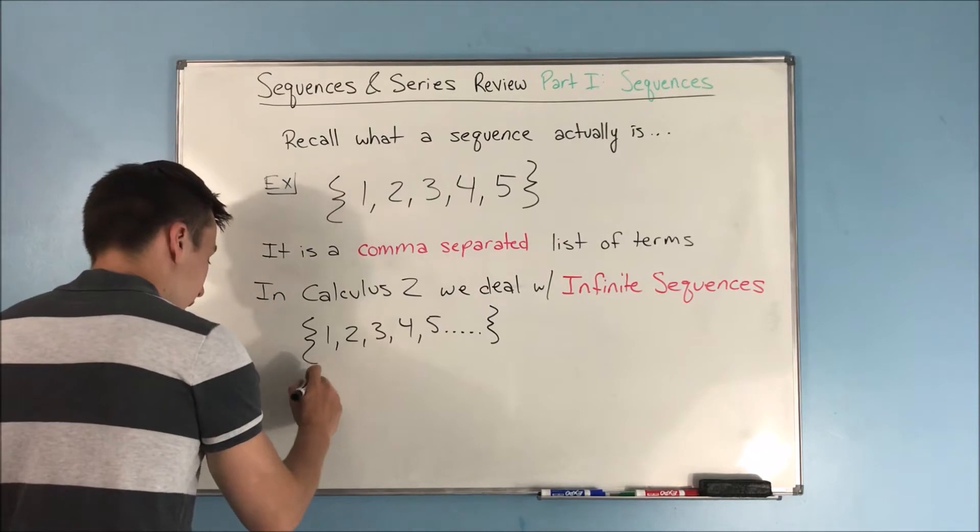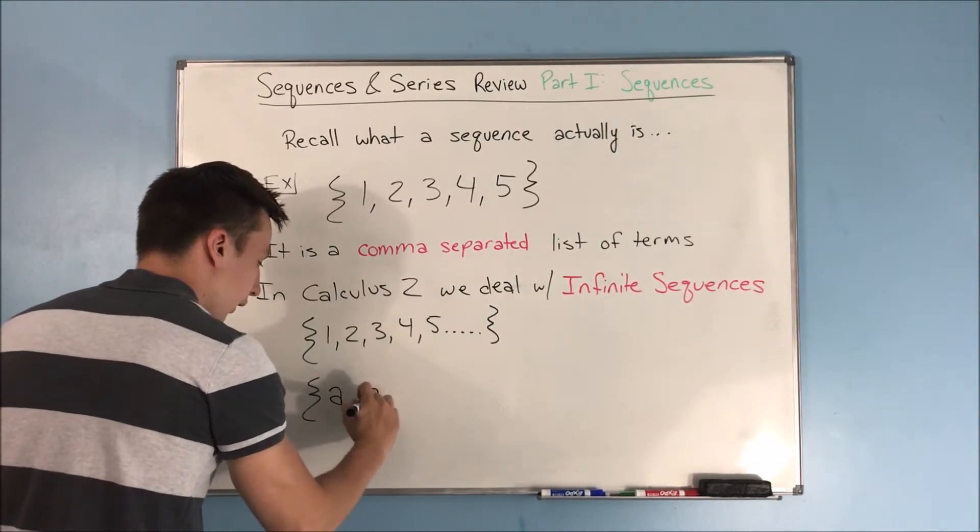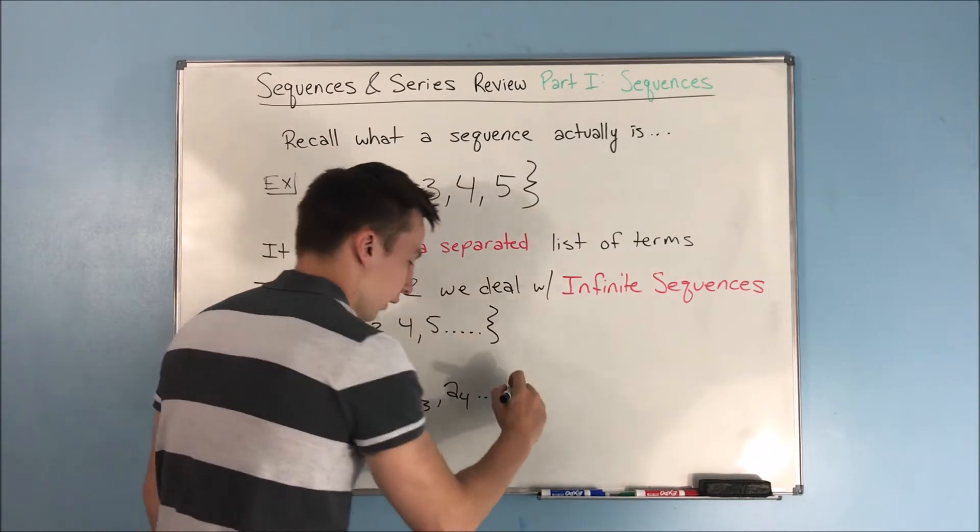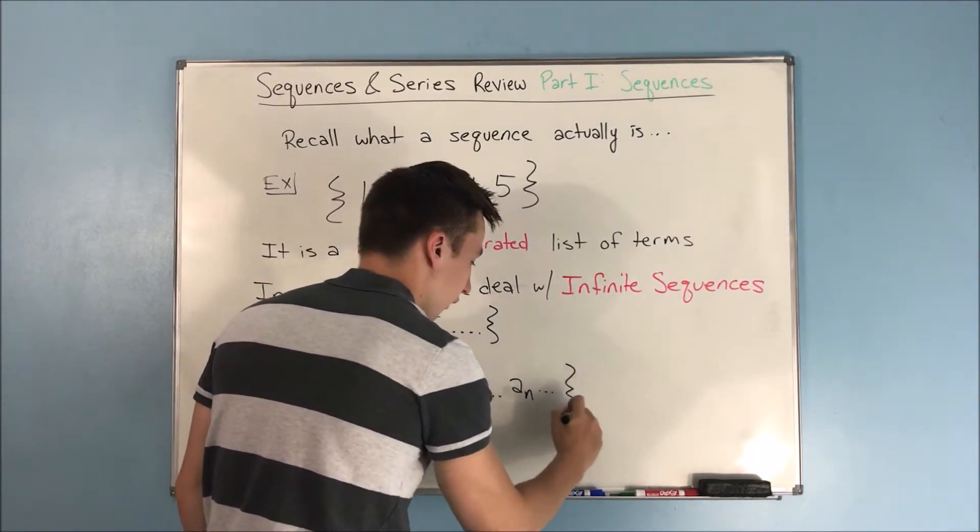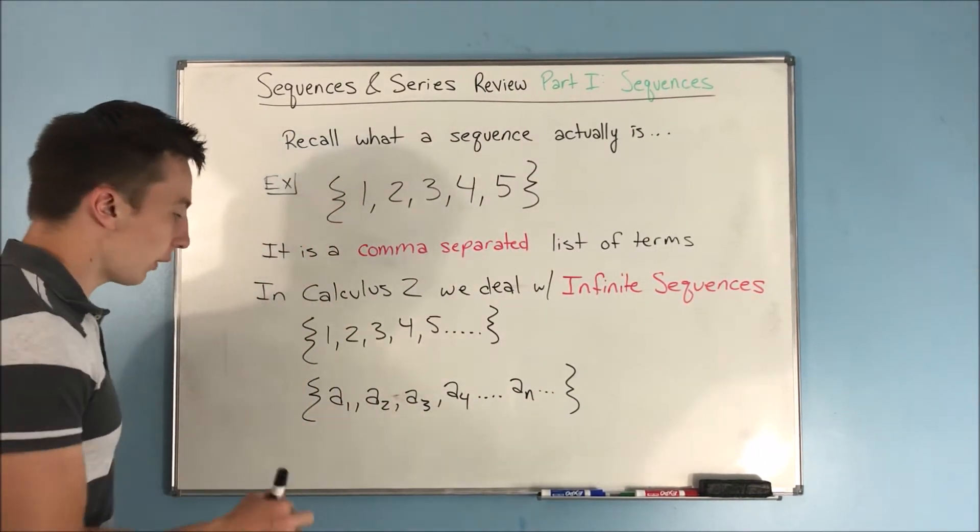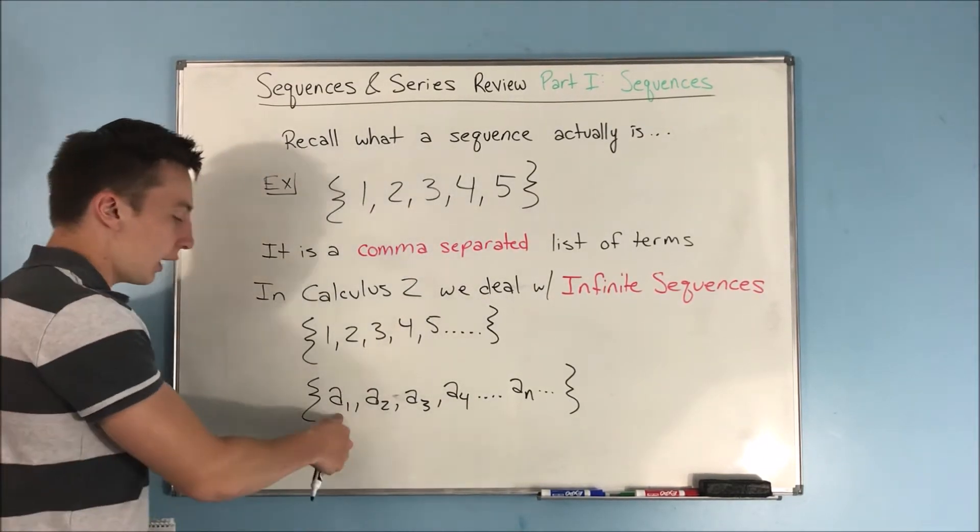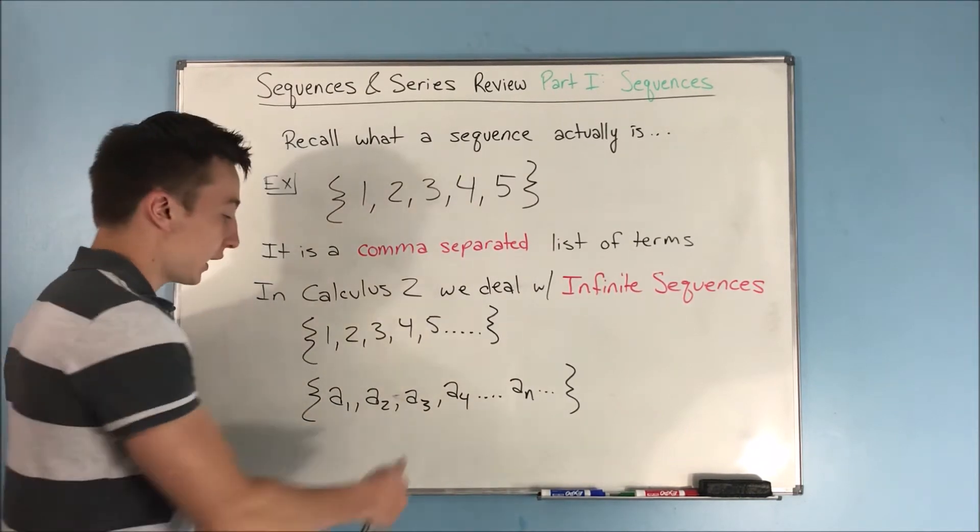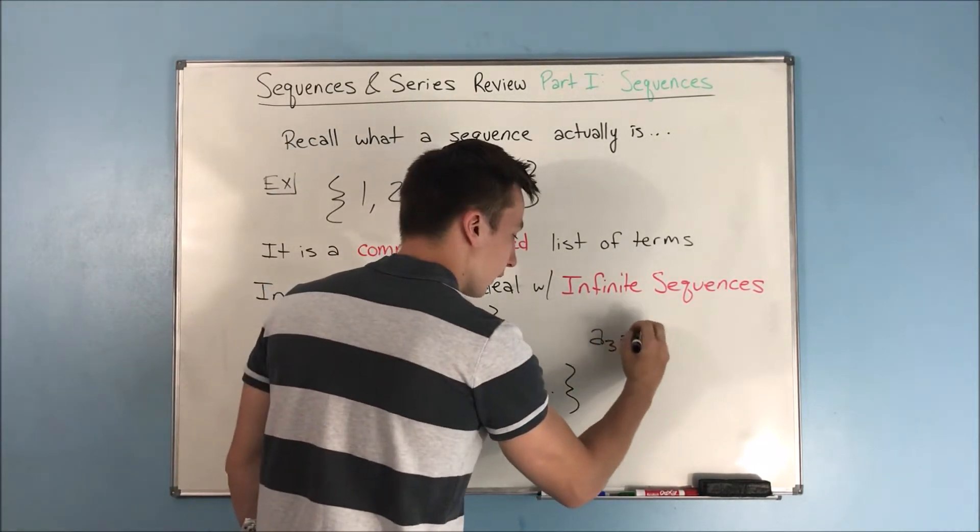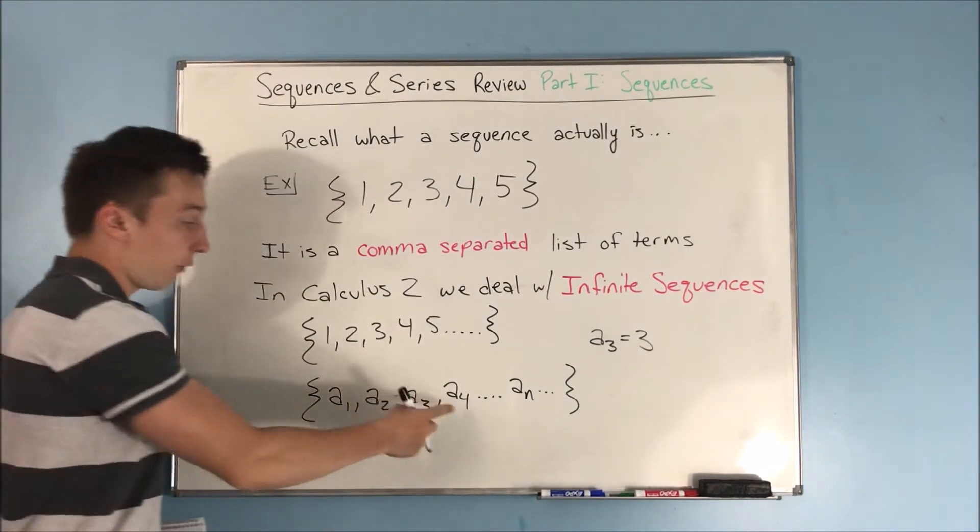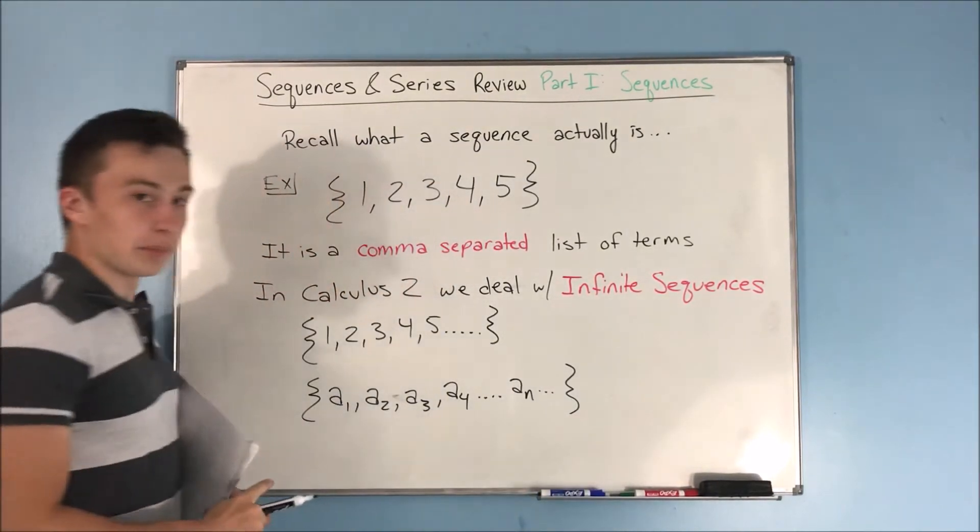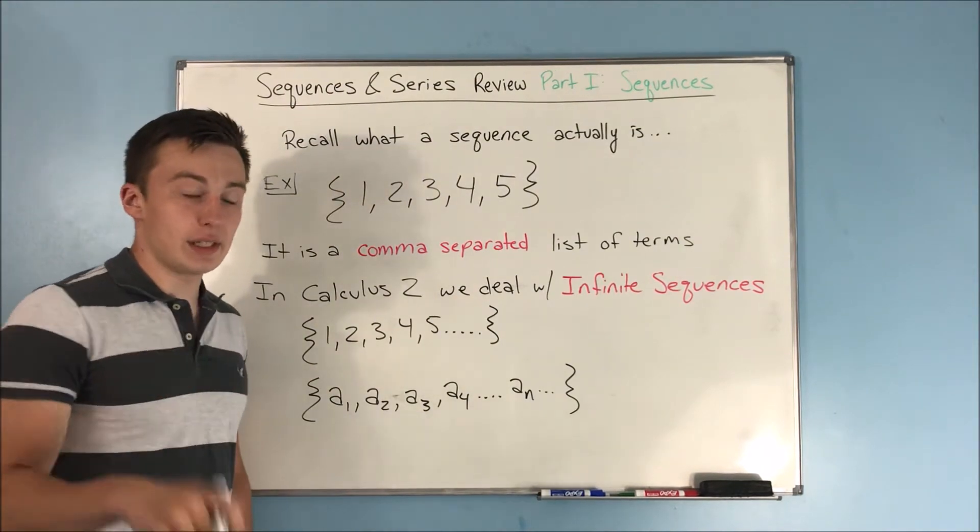Now we can also represent this as the sequence of a sub 1, a sub 2, a sub 3, a sub 4, on and on, a sub n, and on from there. This is kind of the general form of an infinite sequence. This a sub 1 could be anything. A sub 1 means your first term, a sub 2 means your second term. A sub 3 means your third term, which in this case happens to be 3. Now this a sub n here, that's just some term, and that has a bunch of different uses that you're going to see here in just a second.